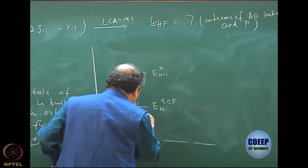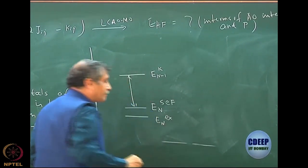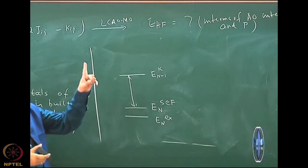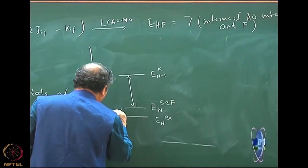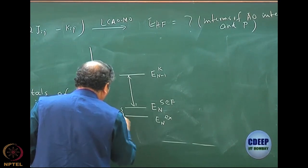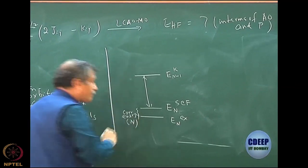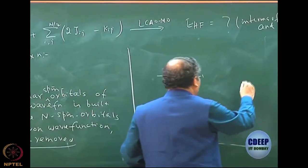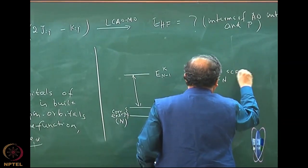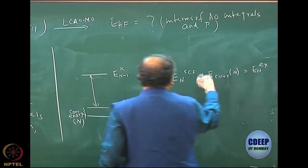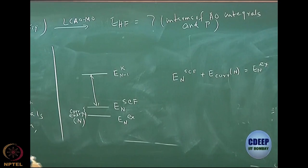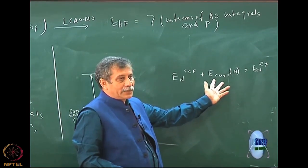Let me see what is the energy of the exact. It will be somewhere lower on a bar diagram — n exact. It will be lower than Hartree-Fock, because by the variational method whatever we are doing will be greater than the exact energy, and if you do full CI that will be the exact energy. This is called the correlation energy of the n electron problem, E correlation n. So E_n SCF plus E correlation of n gives me E_n exact.